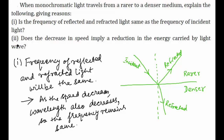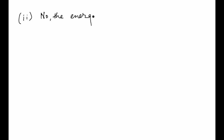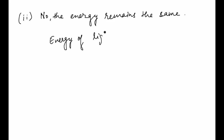Now let's answer the second part: does the decrease in speed imply a reduction in the energy carried by the light wave? The answer is no — the energy remains the same. The expression for the energy of a light wave is E = hν, where h is Planck's constant and ν is the frequency. Since ν does not change and h is a constant, the energy does not change.